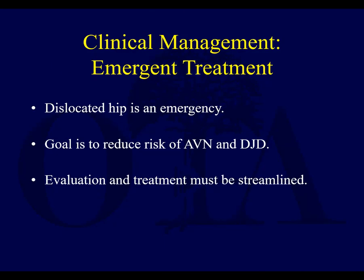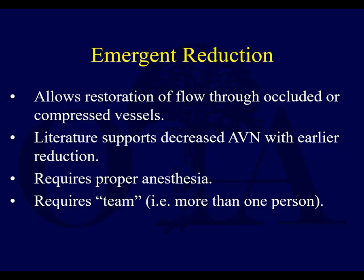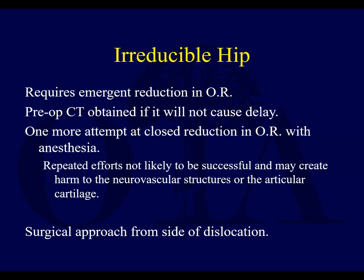Emergent treatment of dislocated hips — the goal is to reduce the risk of osteonecrosis and degenerative joint disease down the road. This helps to restore blood flow through the occluded ascending cervical branches. The literature that is available supports decreased rates of osteonecrosis with early reduction. You need good anesthesia, either in the emergency department or operating room, and often one person stabilizing the pelvis while another reduces the hip. If you truly have an irreducible hip, you need to go to the OR with general anesthesia and, if necessary, open reduction to prevent osteonecrosis.